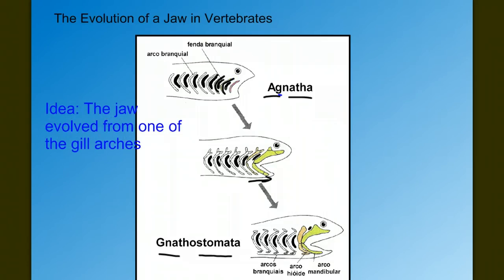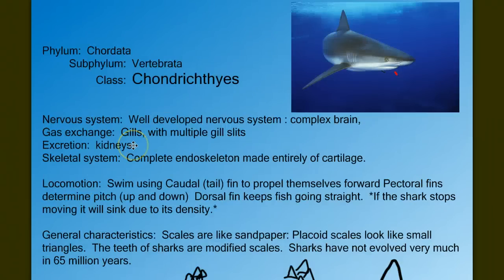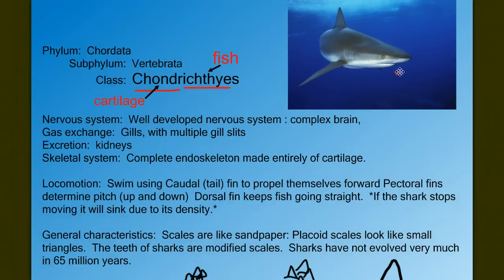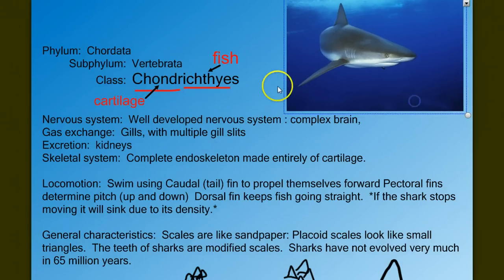Once jaws evolved, the next question is: what type of skeleton — cartilage or bone? Going down the cartilage route, we have class Chondrichthyes, or cartilage fish. 'Chondri' means cartilage, 'ichthyes' means fish. Examples of cartilage fish include sharks, stingrays, skates, chimera, and ratfish. These fish have skeletons composed entirely of cartilage.